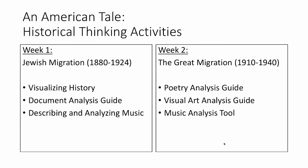The historical thinking activities for the first two weeks of this course: in week one, when we study Jewish migration, we will use the Visualizing History guide. We will take a look at the photography of Lewis Hine and demonstrate how photographs can be used as a primary source. We will also analyze a document together using the document analysis guide — a speech before Congress on the 1924 Quota Law. The document analysis guide can be used for any document, but we'll use it for the 1924 Quota Law in week one.